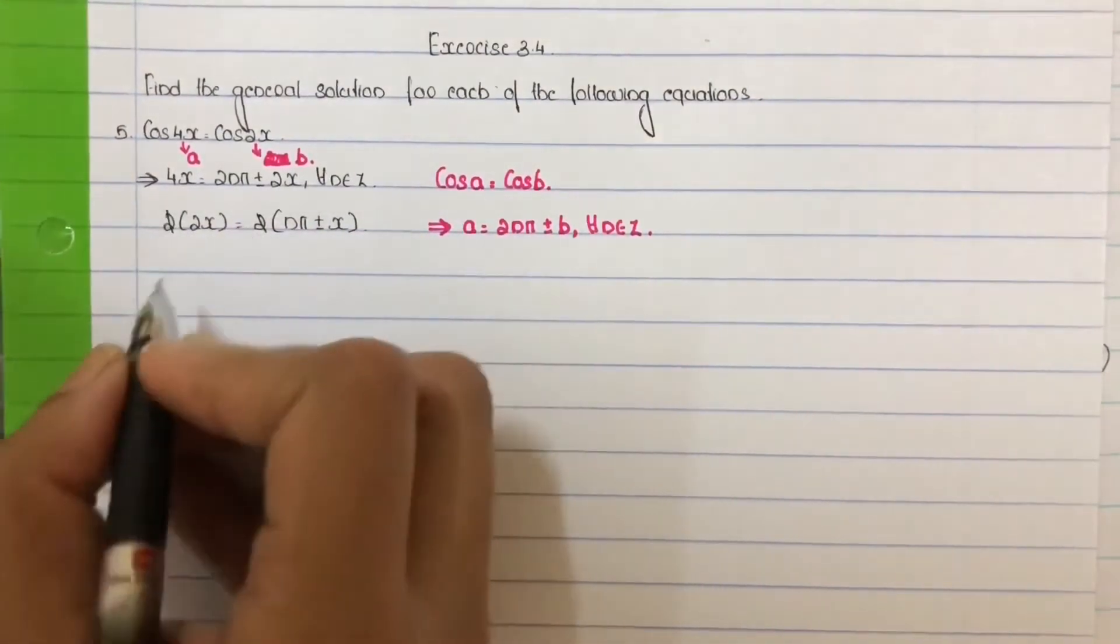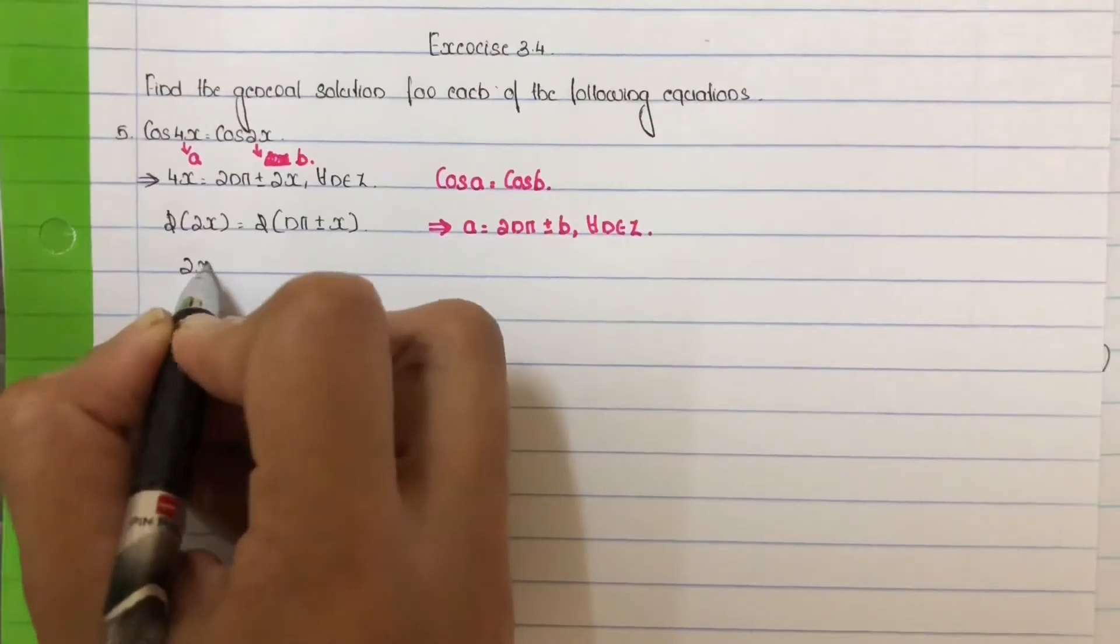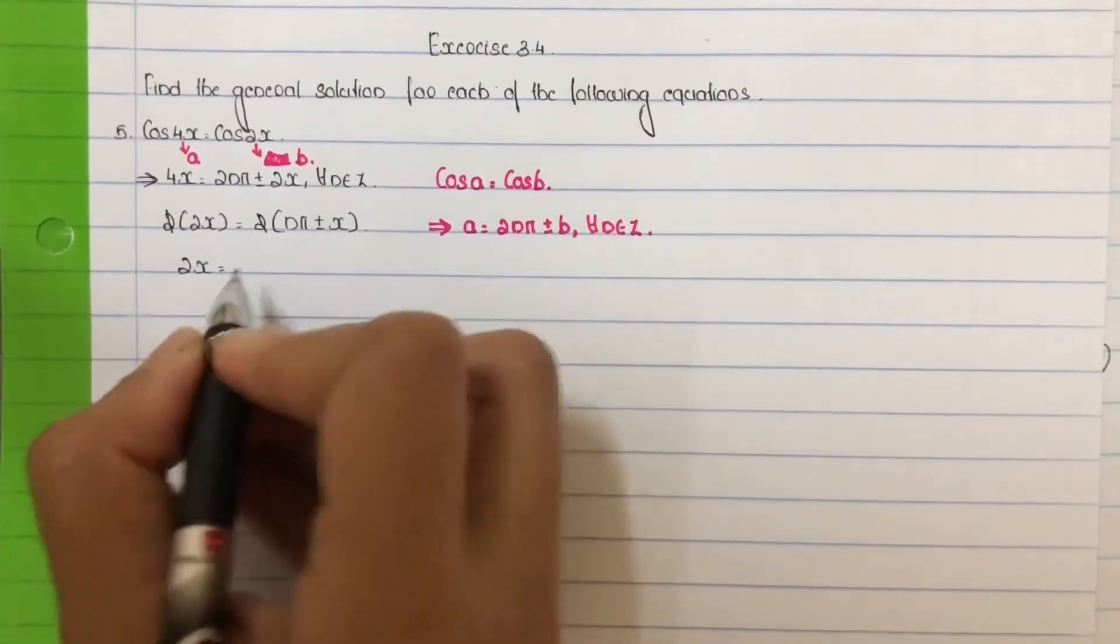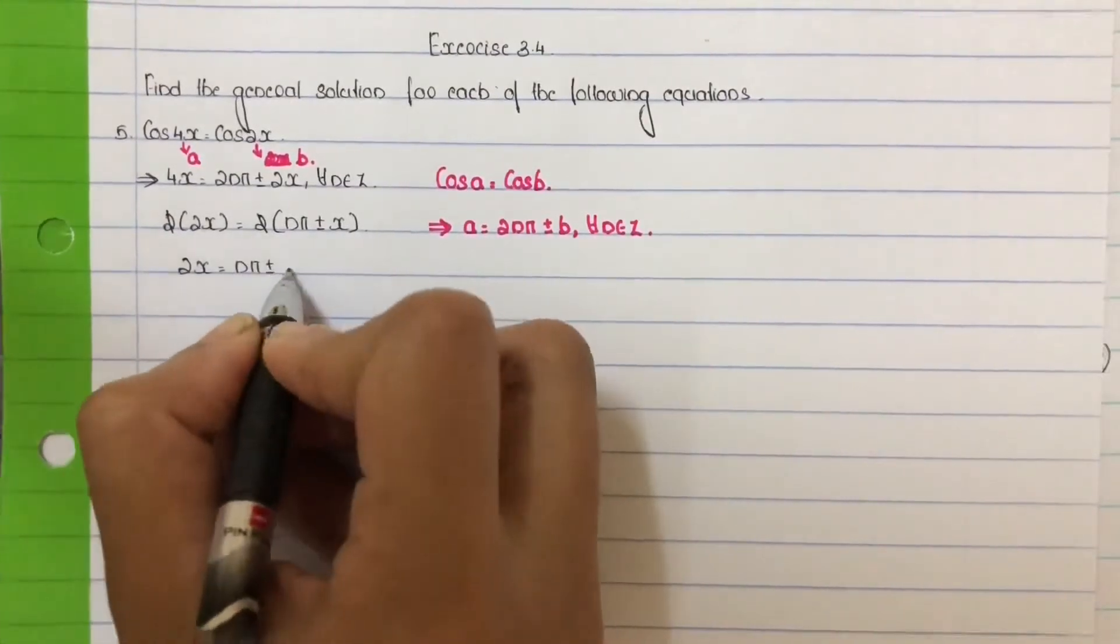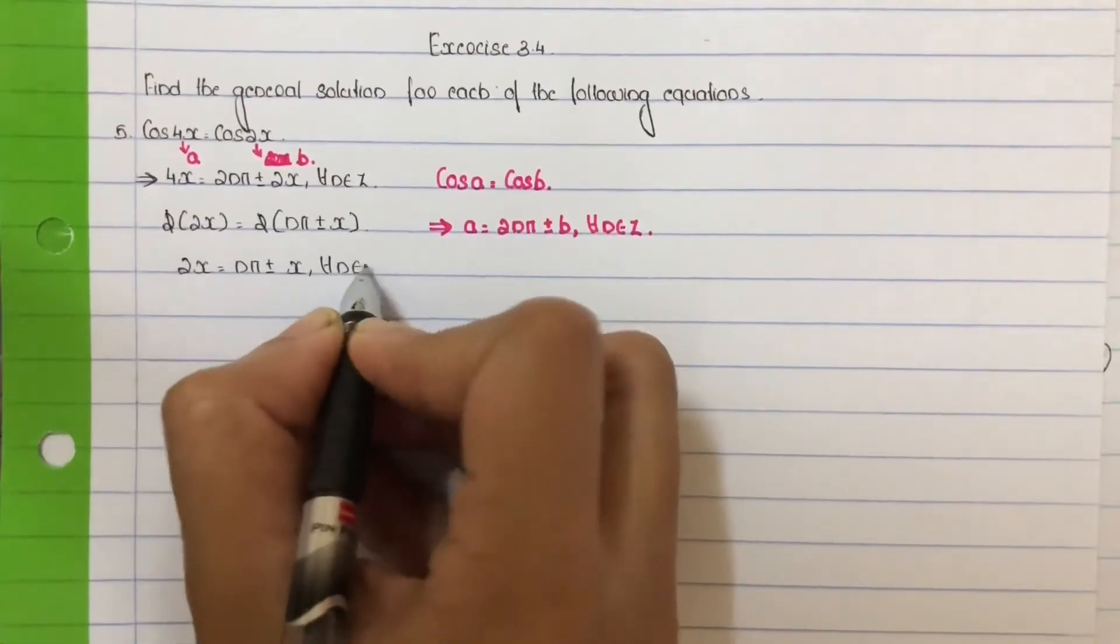2 into 2 cancel. We get 2x equal to nπ plus or minus x, for all n belongs to integers.